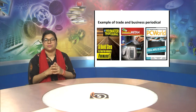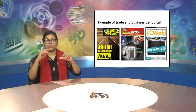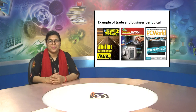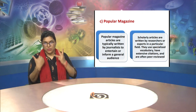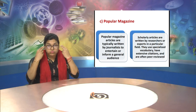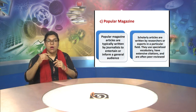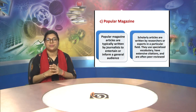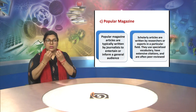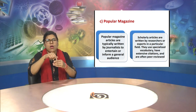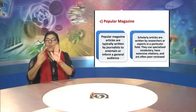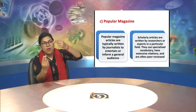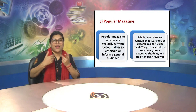The third type is popular magazines. Popular magazine articles are typically written by journalists to entertain or inform a general audience. In contrast, scholarly articles are written by researchers or experts in a particular field; they use specialized vocabulary, have extensive citations, and are often peer-reviewed.